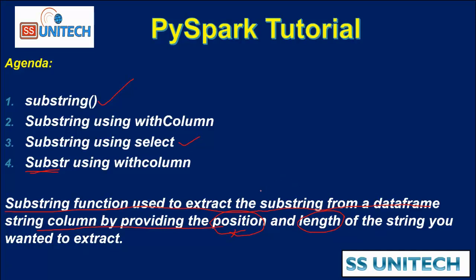For example, assume we have the string 'substring' and we just want to extract the subpart 'sub' from it. We have to specify the position, which is one (the first position), and then how many characters we want — we want only three characters, since 'sub' has three characters. So the second parameter should be three.